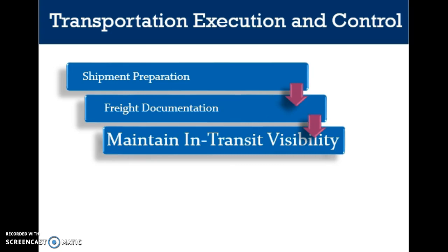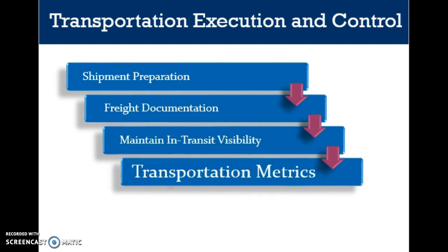Maintaining in-transit visibility is essential. Management of the transportation process does not end when the freight and related documents are tendered to the carrier — quite the opposite. It's important to control the freight and manage key events as product moves across the supply chain. Visibility of in-transit freight is a key facilitator of this control, as it prevents freight from temporarily falling off the radar screen. Transportation metrics are also a key component.